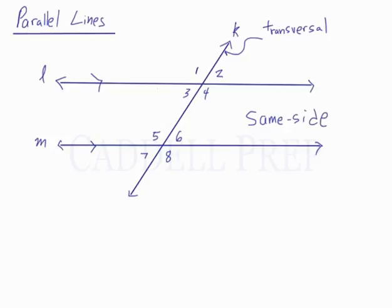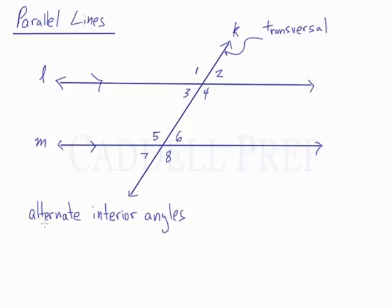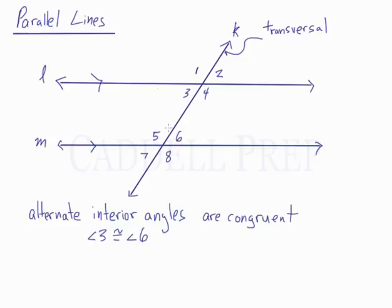Alternate interior angles are on different sides of the transversal and between the parallel lines. Alternate interior angles are congruent. The pairs are angles 3 and 6, so angle 3 is congruent to angle 6, and angles 4 and 5, so angle 5 is congruent to angle 4.